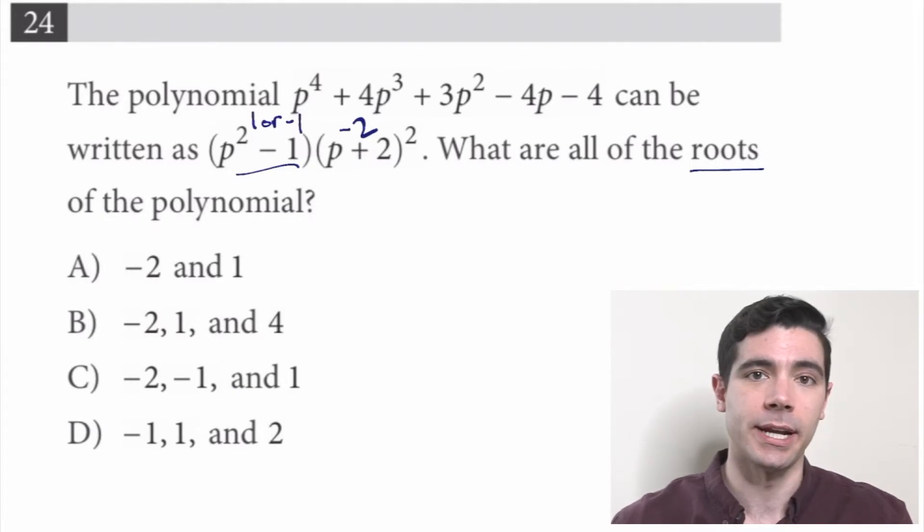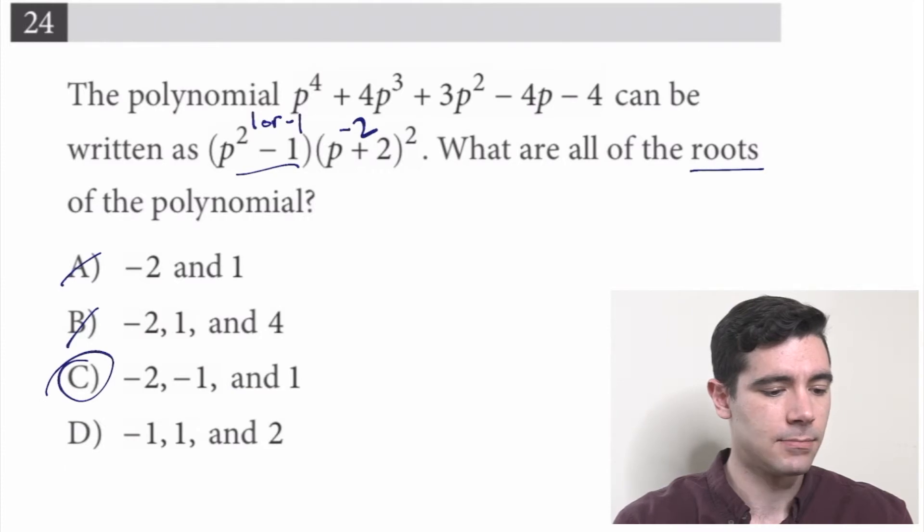So we're looking for 1, negative 1, and negative 2. Nope. Nope. Oh, nice. Answer choice C has our negative 2 and negative 1 and 1. Cool.